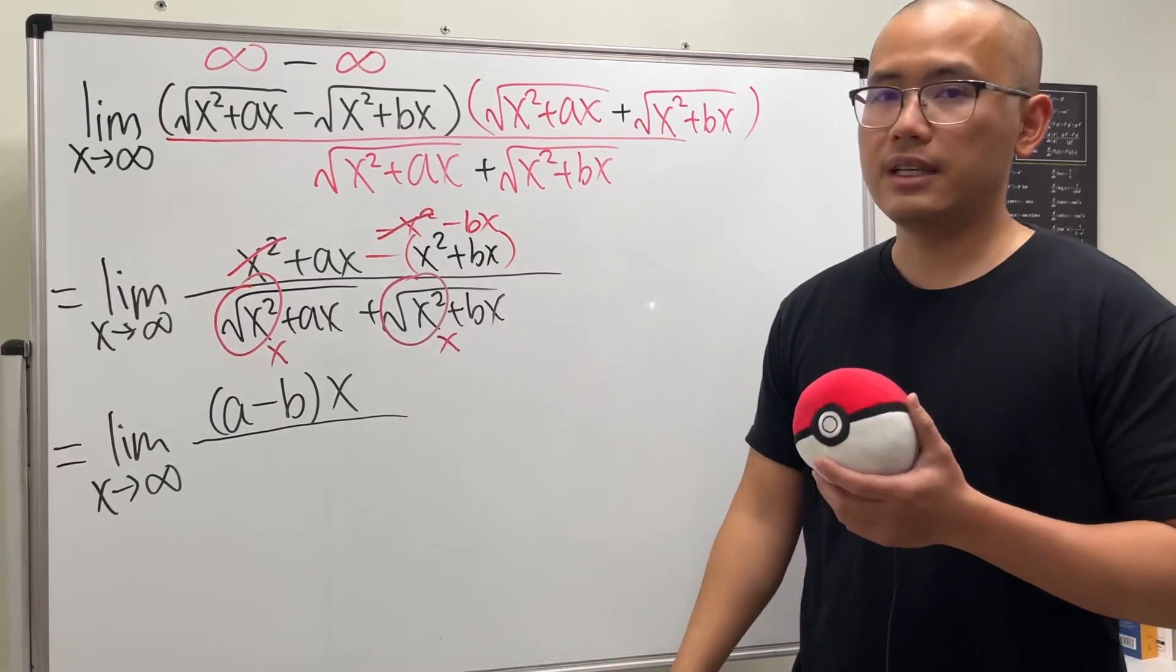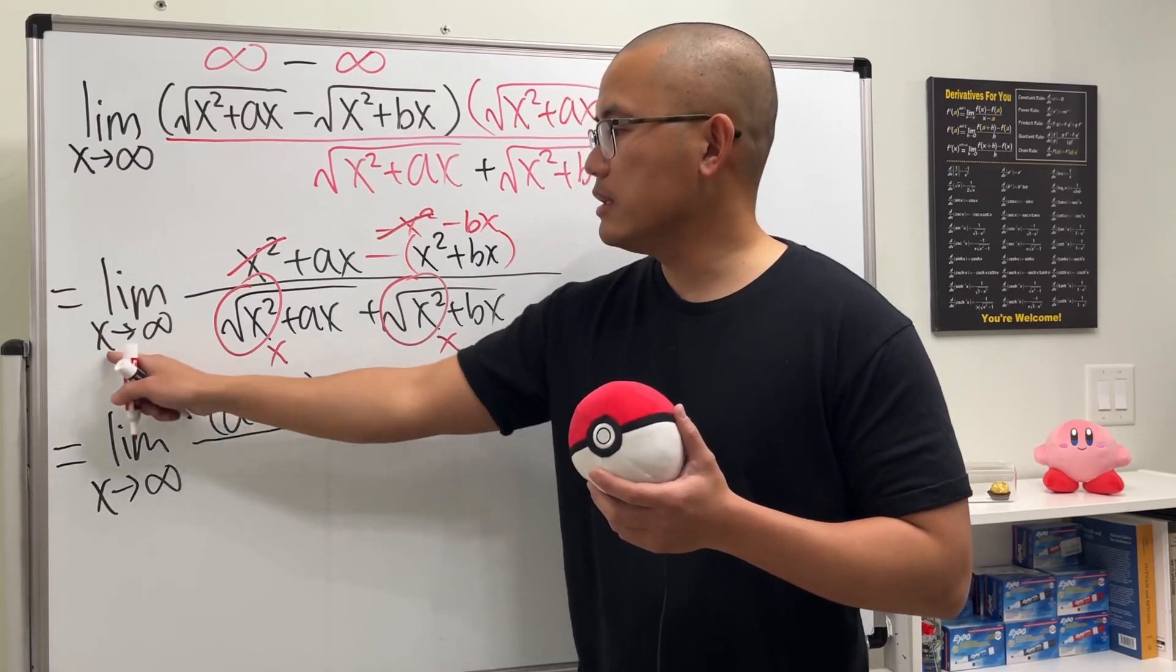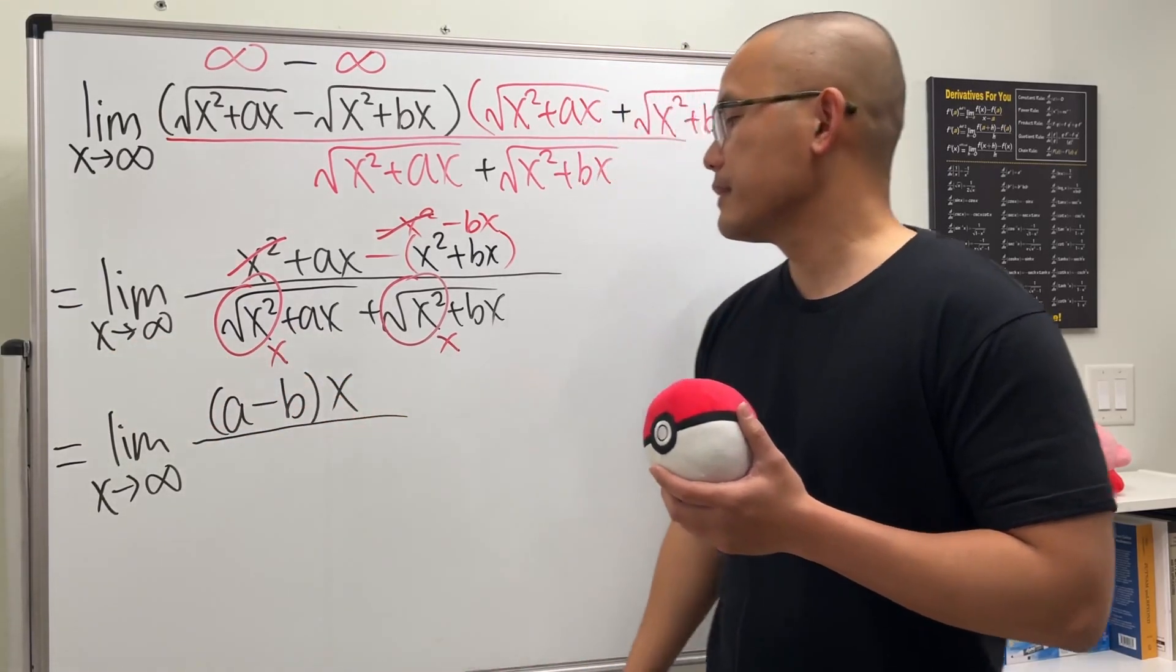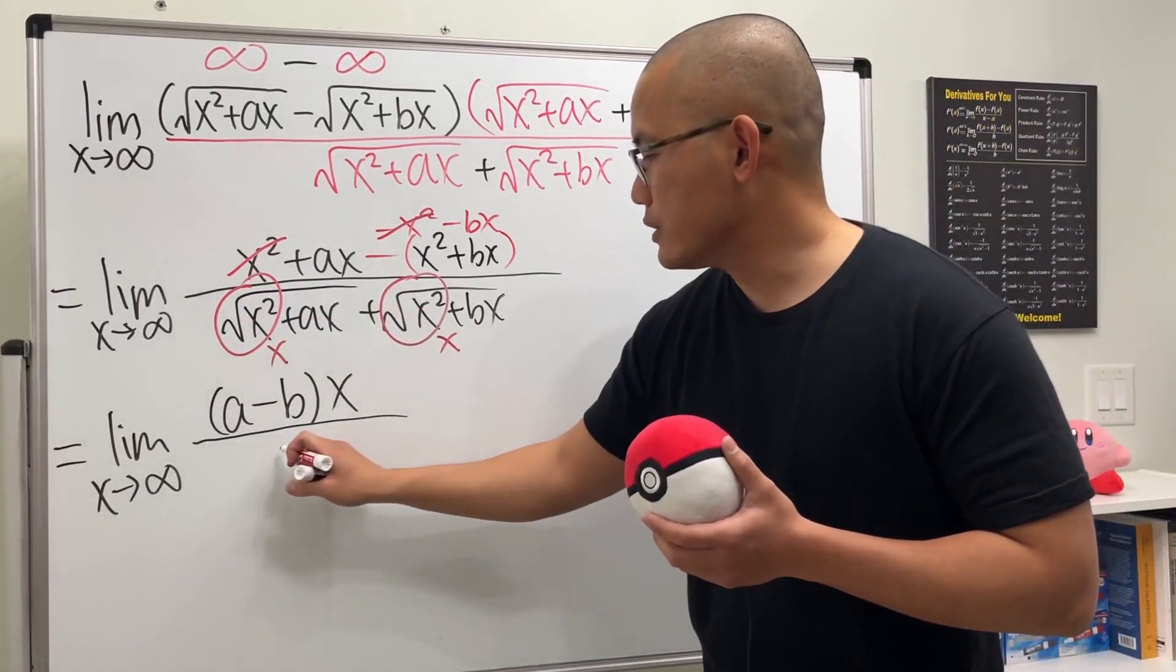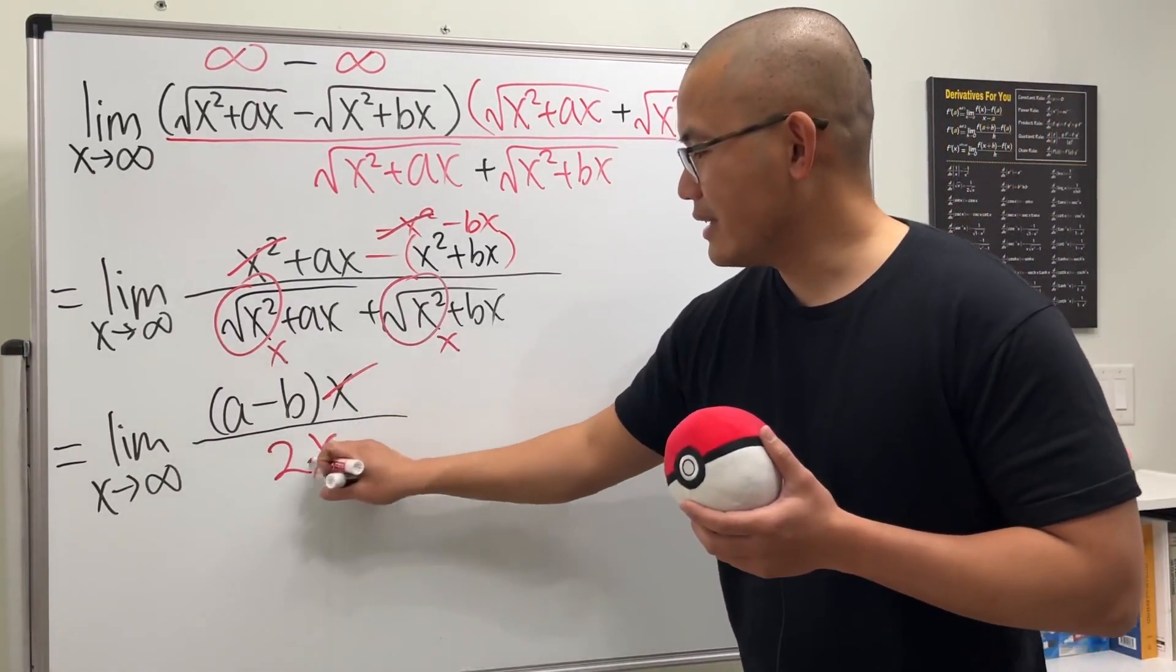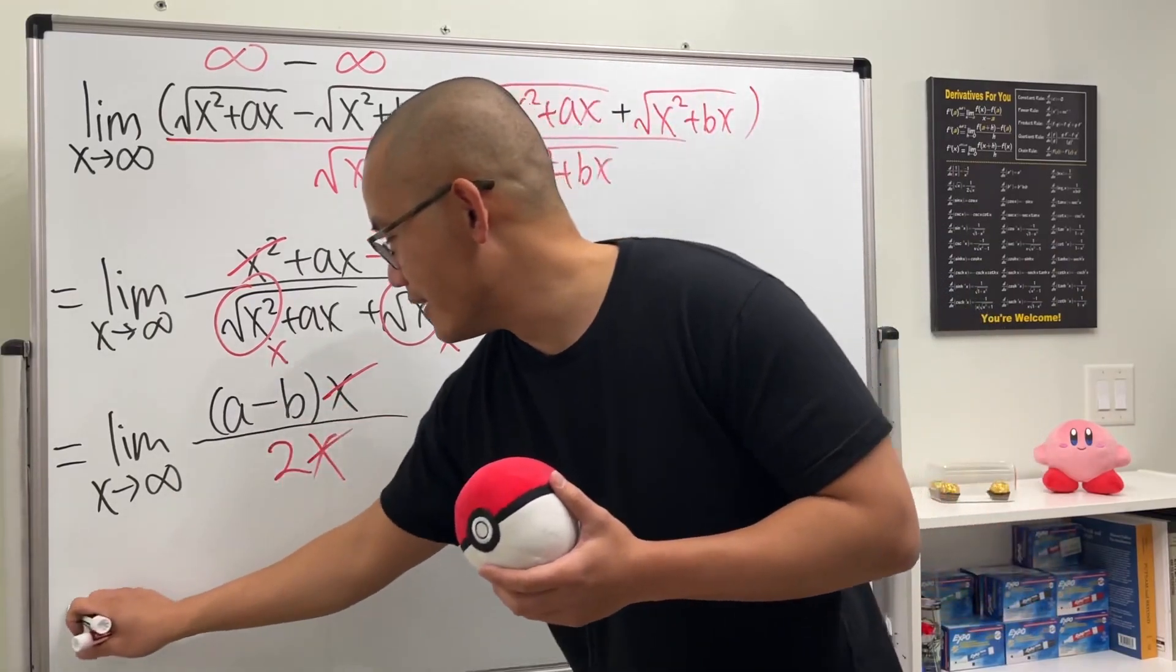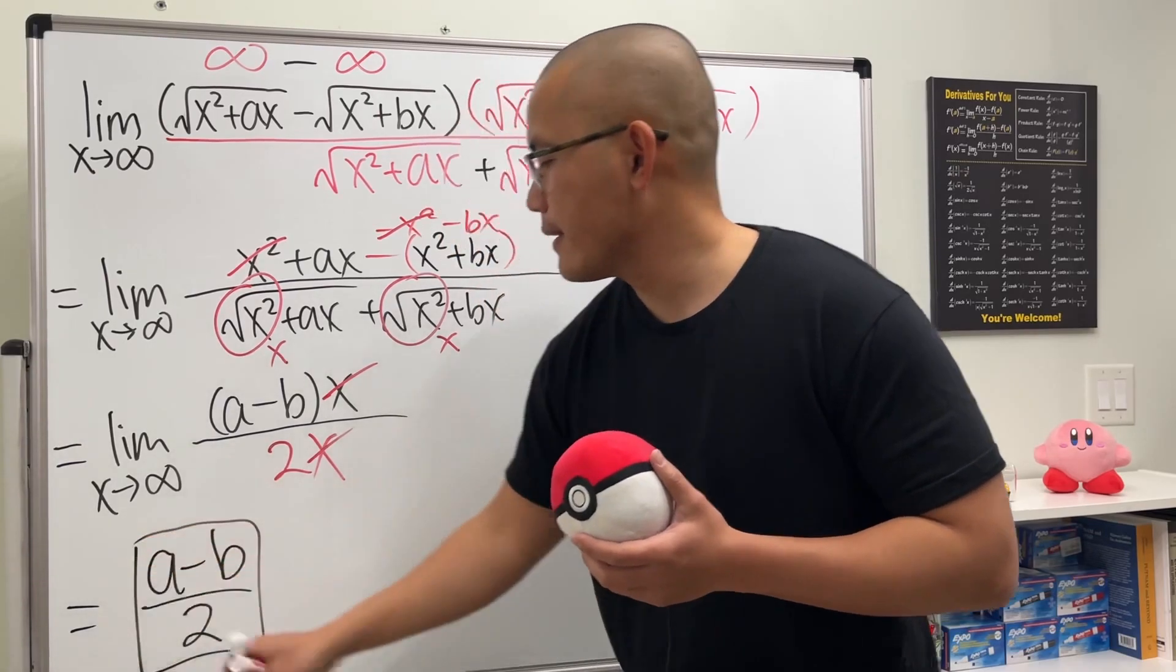And the reason that this is just a positive x is because x is positive infinity—we don't need to use the absolute value. And on the bottom we see that this together we just get 2x. So x and x cancel out, finally we just get that answer: a minus b over 2.